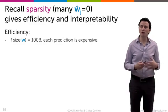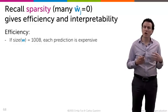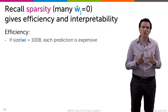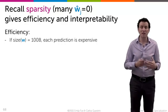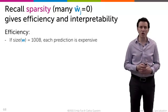So recall the notion of sparsity. A model is sparse when many of those w_j's are equal to zero, and that can help us with both efficiency and interpretability of the models as we saw in regression.